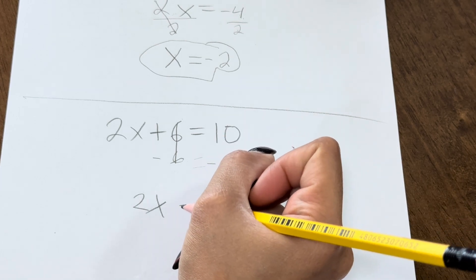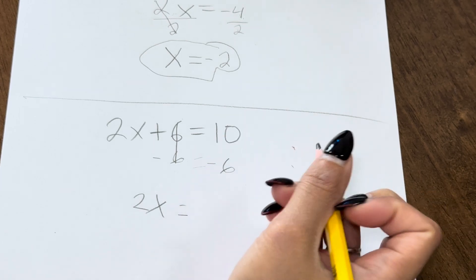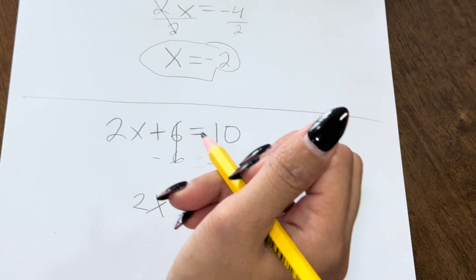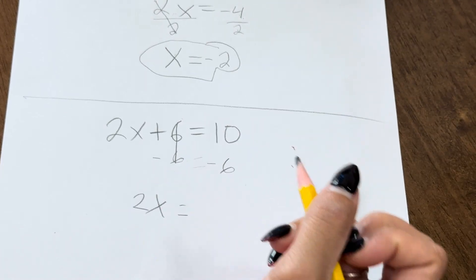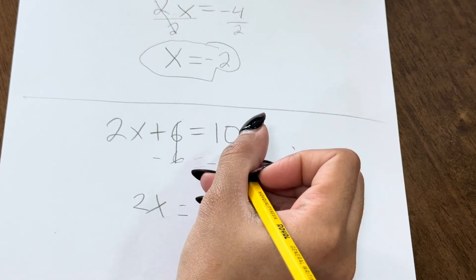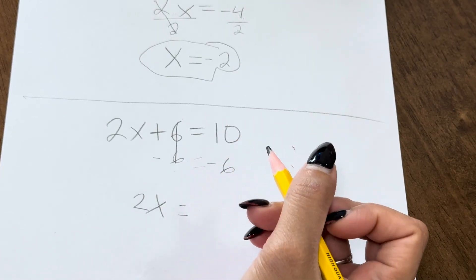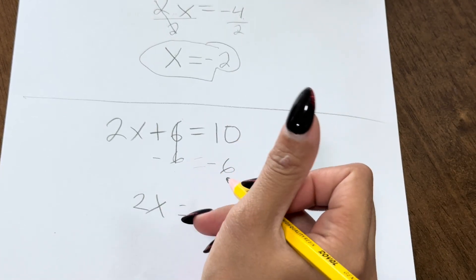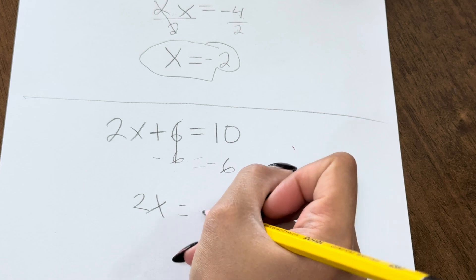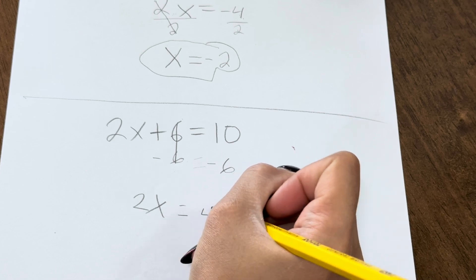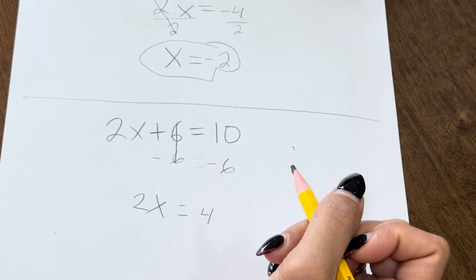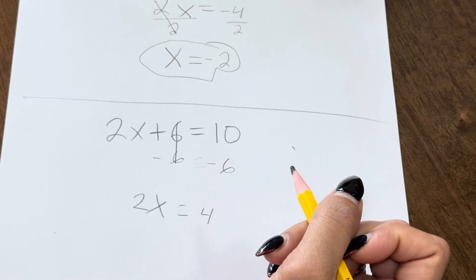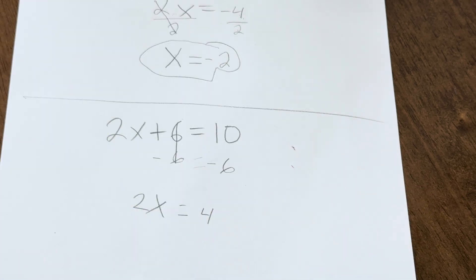Equals. And then what's 10 minus 6? You have to do both sides — 10 minus 6. It's 4. That's right. We're going to do calculus next, I'm not kidding. So now we have 2x equals 4.